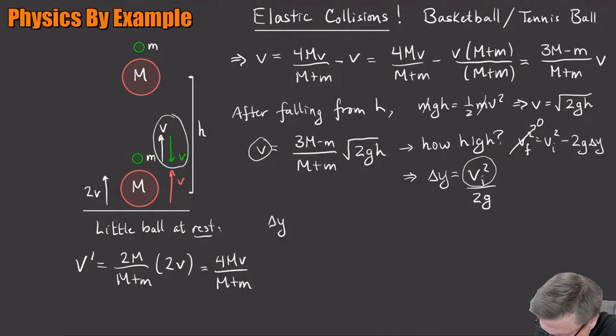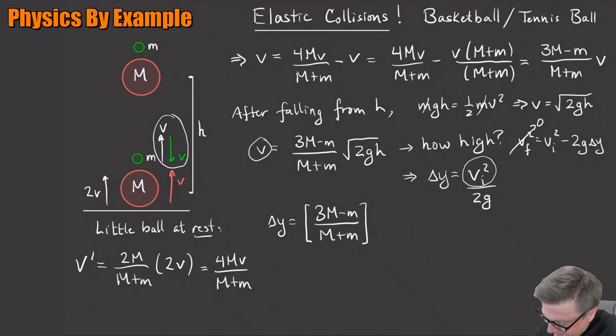Okay. So let's see what this height's going to be then. So our delta Y is going to be V squared. So I've got this 3 big M minus little m over the sum of the masses. And then I square the square root, right? So I got 2G and this is going to be over 2G. And then I got my H. There we go. So it just depends on, oops, I got to square this thing. So it just depends on the squared factor and then it depends on the initial height.